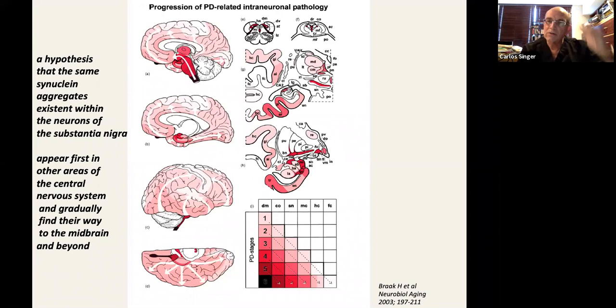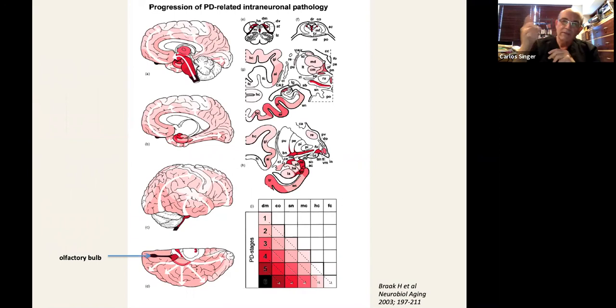And they follow a certain order. So, he's finding synuclein aggregates appearing in certain areas and then appearing in additional areas. Where he finds them first is in two areas, and he calls this stage one.